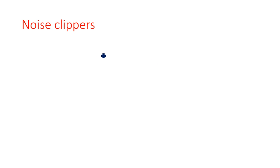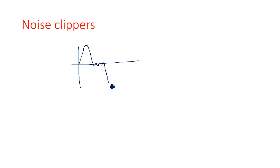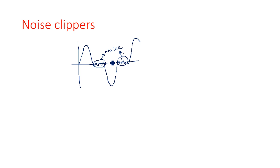Using that same concept, series type clippers and shunt type clippers are also used to eliminate the noise present in the signal. Suppose you have a sinusoidal signal with a noise component — pure waveforms are not available in nature; some noise will always be associated with signals. Consider a waveform where the signal is incorporated with some noise. At every crossover, from positive to negative and negative to positive, there is noise that has to be clipped off using clippers — that is why these are known as noise clippers.